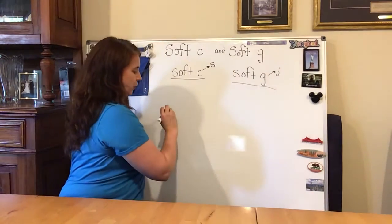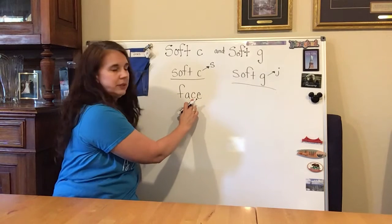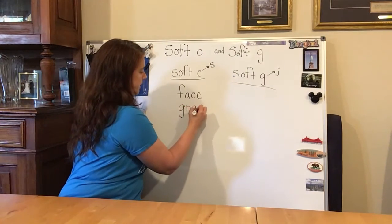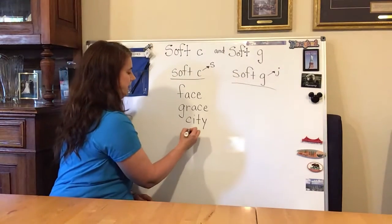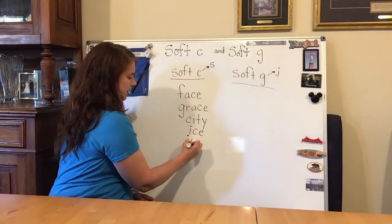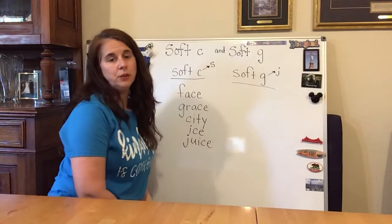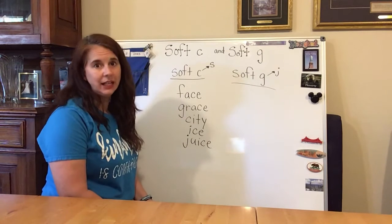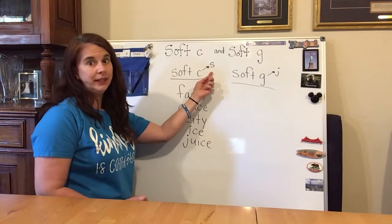So soft C — we have some words. Face. See how in 'face' the C sounds like an S? That's the soft C sound. Face. Grace. City. Ice — I had ice in my drink at lunch today. Juice. So you see how the soft C makes the S sound. Now the hard C makes the sound like 'ck,' like in cat, castle, or cake. But we're learning about the soft C sound that makes the sound like the letter S.